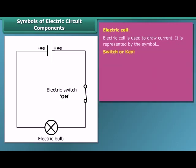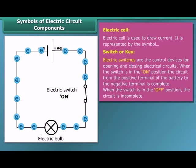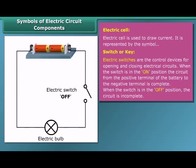A switch or key makes or breaks the connection in a circuit. When the switch is in the on position, the circuit is closed and the current flows throughout the circuit. When the switch is in the off position, the circuit is open and no current flows through the circuit.